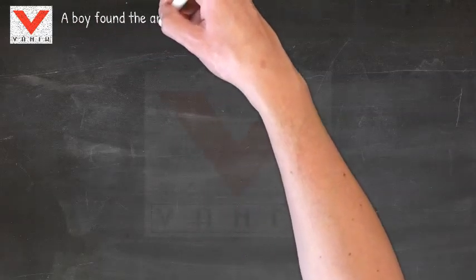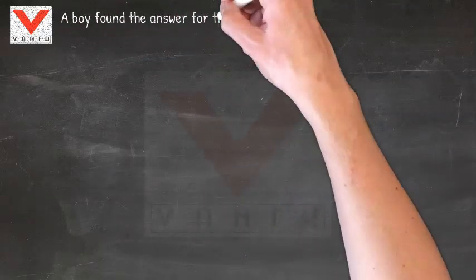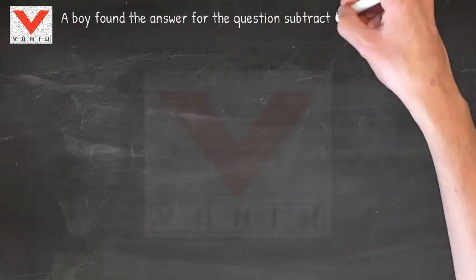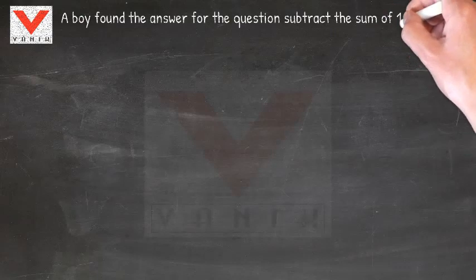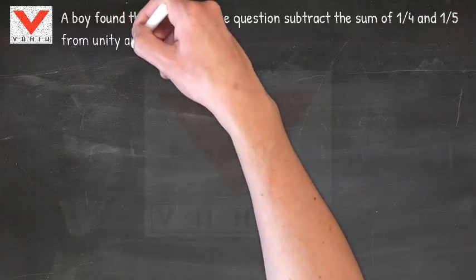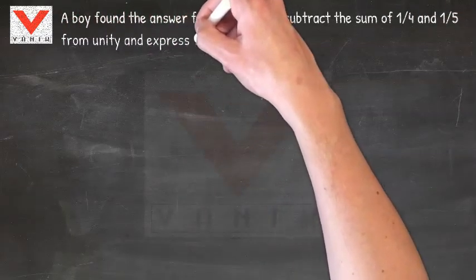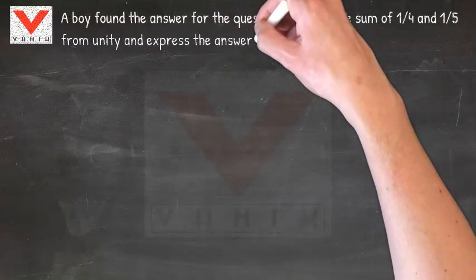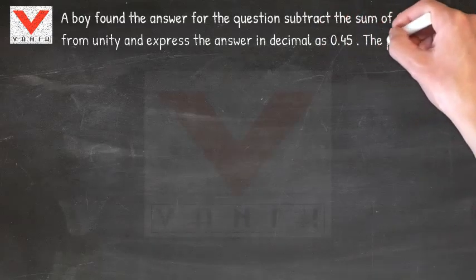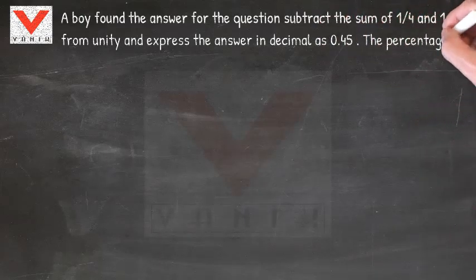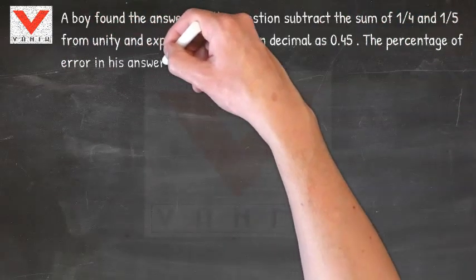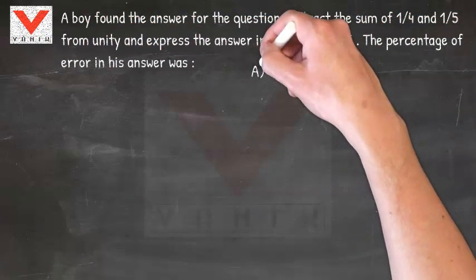Vana Aptitude Tips. A boy found the answer for the question: subtract the sum of 1/4 and 1/5 from unity and express the answer in decimal as 0.45. Then what is the percentage of error in his answer?